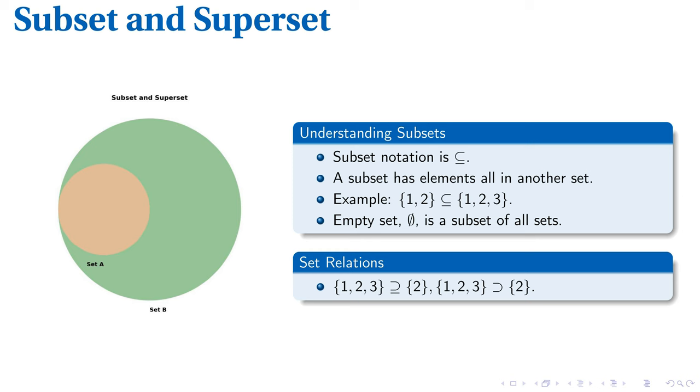Now let's turn to supersets, sets that include every element of another set. In our case, the set {1, 2, 3} is a superset of the set {2}. Both expressions—{1, 2, 3} ⊇ {2} and {1, 2, 3} ⊇ {2}—convey that {1, 2, 3} is a superset of {2}, showcasing how notation captures this relationship.